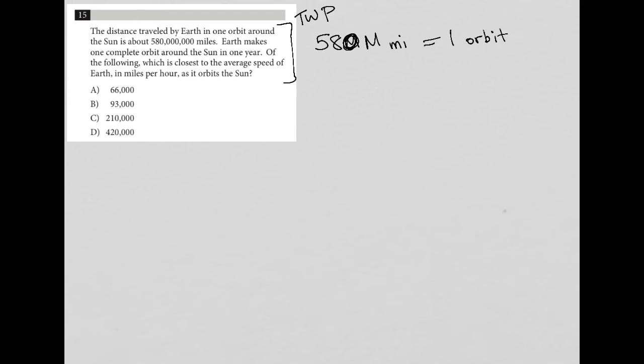Earth makes one complete orbit around the sun in one year, so this equals one year. Of the following, which is closest to the average speed of Earth in miles per hour? So speed is what I'm looking for. And the unit that I want for speed is miles per hour. If you pay attention, if you see what we've been given, we've been given miles, right?